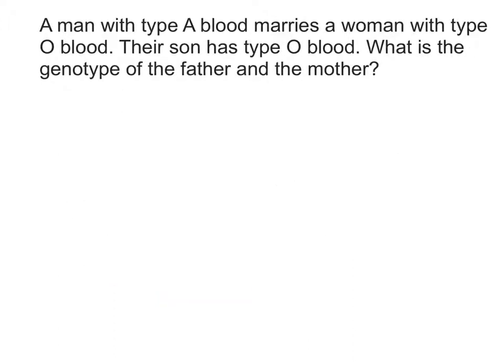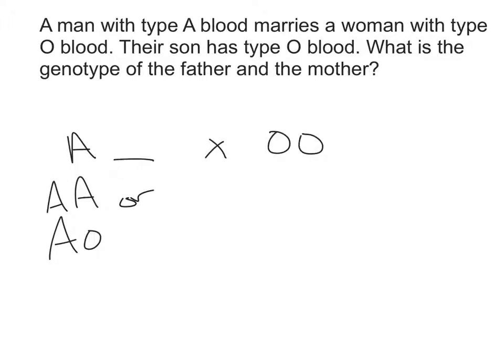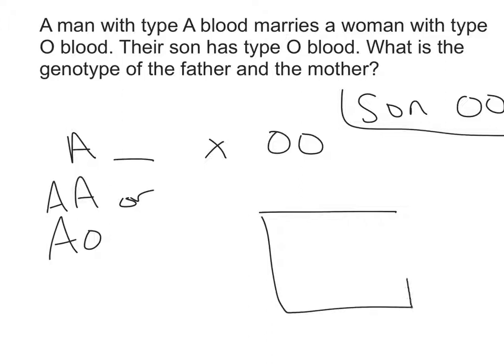In this question, we have a man with type A blood and a woman who has type O blood. For the man, we know that he has at least one A allele. The other one could be an A or an O, so he could be the genotype AA or AO. The female is type O blood, which means her genotype is OO. Their son is also type O blood, so genotype OO. The easiest way to figure this out is to plug what we know into a Punnett square.